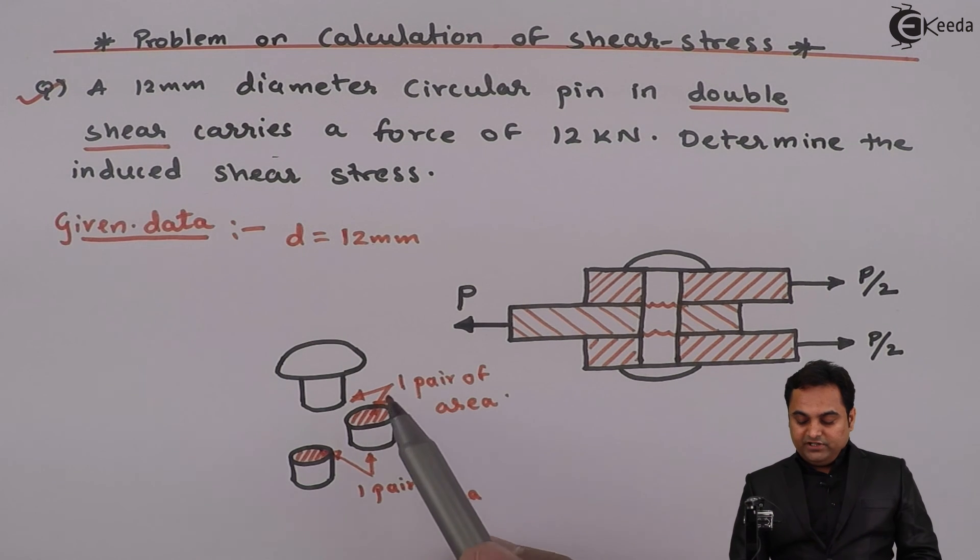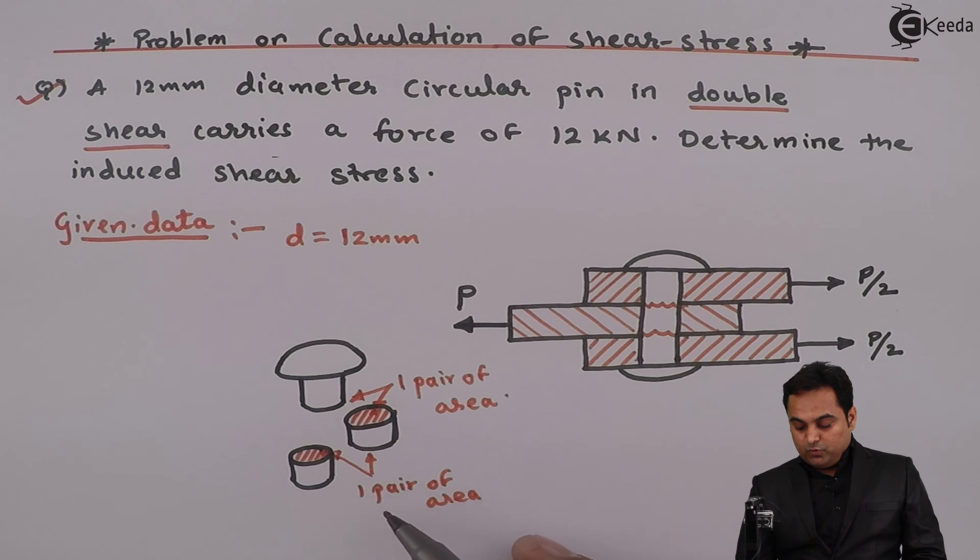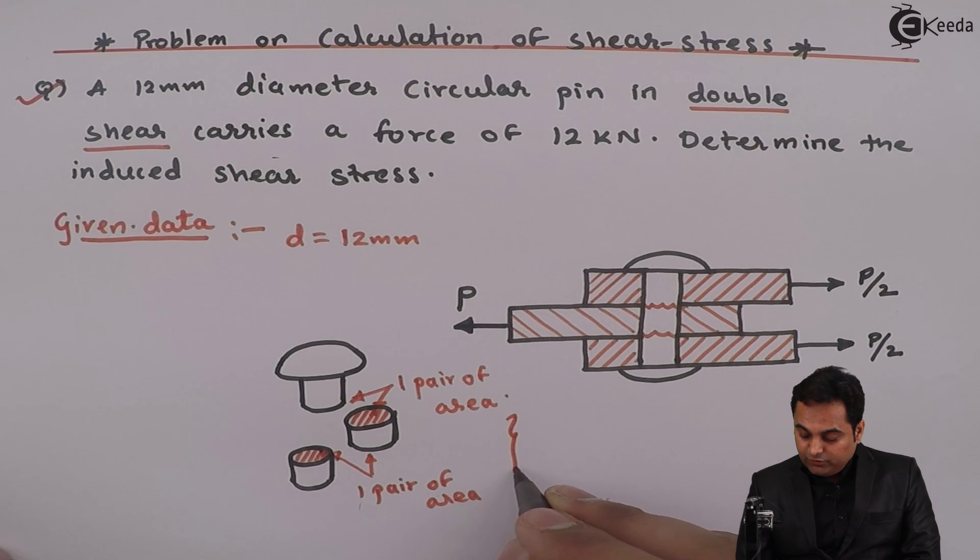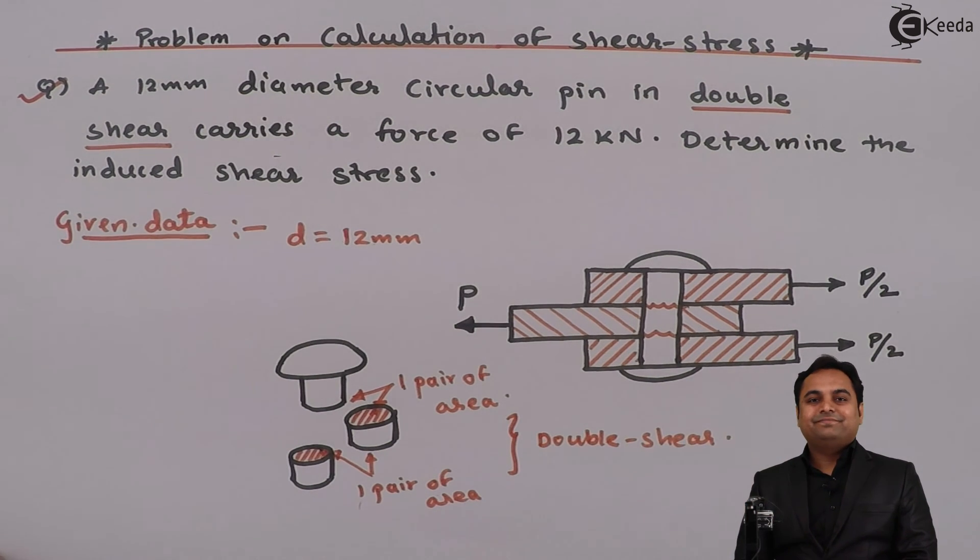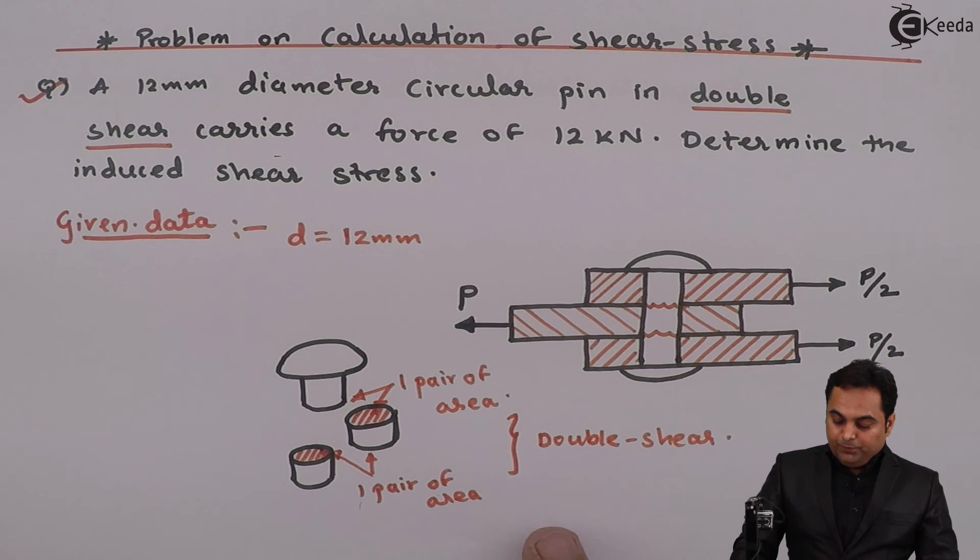So one pair of area at the top, one pair of area at the bottom. That is why it is a case of double shear, and it is shearing in two parts as we can see here.